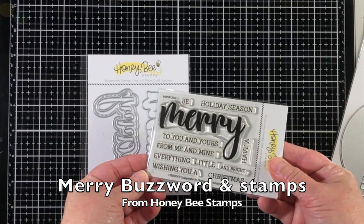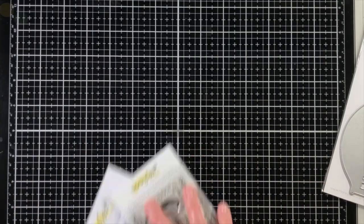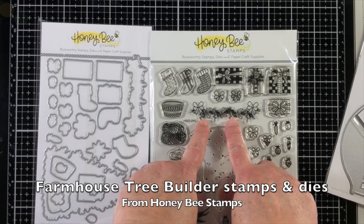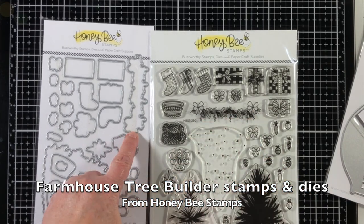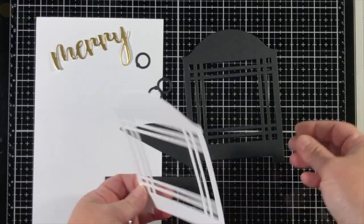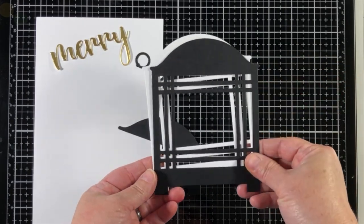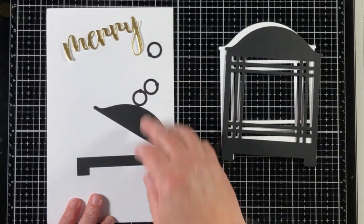This is the Lantern Builder A2 Honeycut dies and I'm pairing that with the Farmhouse Tree Builder stamps and dies and one of the new buzzwords. It's the Merry buzzword with the coordinating stamps.